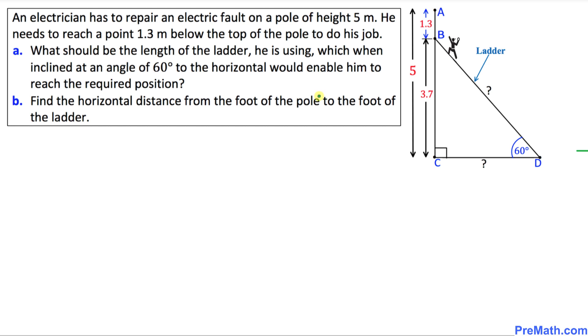An electrician has to repair an electric fault on a pole of 5 meter height. He needs to reach 1.3 meter below the top of the pole to do his job. We have been asked to calculate two things. What should be the length of the ladder if the angle of inclination is 60 degrees? And the second thing is calculate the horizontal distance from the foot of the pole to the foot of the ladder.